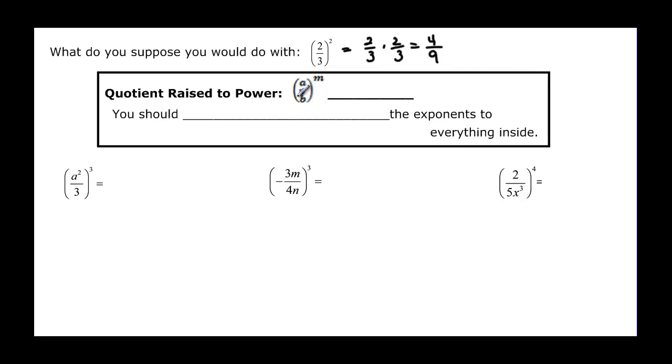So just like we had the product raised to a power, we can say that we have quotient raised to a power. We just distribute the power to everything top and bottom inside. So again we are going to distribute the exponents.